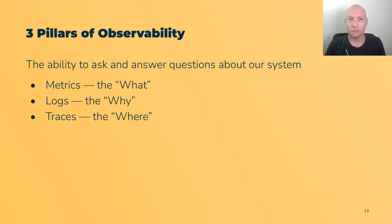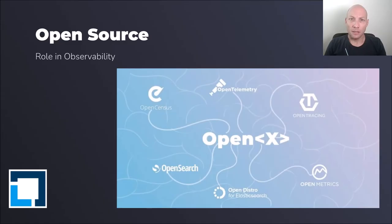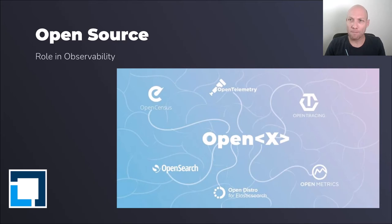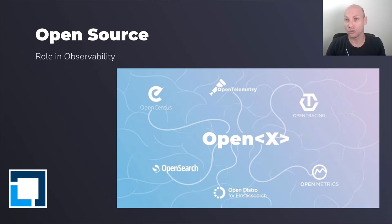To summarize: observability is essentially the ability to ask and answer questions about our system, and the three pillars are metrics, logs, and traces that tell us the what, the why, and the where, respectively. Now let's see the role of open source in observability — after all, we're at Open Source Summit. I'd like to share three important insights about the role of open source in observability.